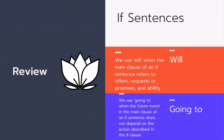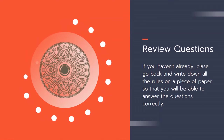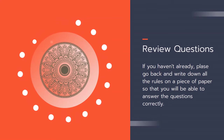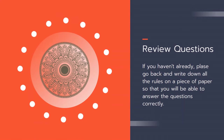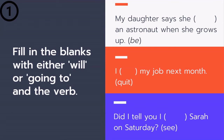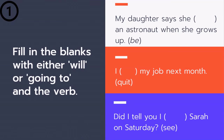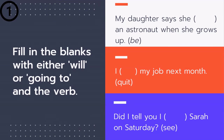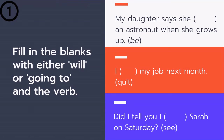I want to see if you can put these rules into practice, so here are some review questions. It's important to remember all the rules — if you haven't already, please go back and write down the rules on a piece of paper so you'll be able to answer the questions correctly. Okay, fill in the blanks with either will or going to plus the verb. First one: 'My daughter says she ___ an astronaut when she grows up.' Is it 'will be' or 'going to be'?